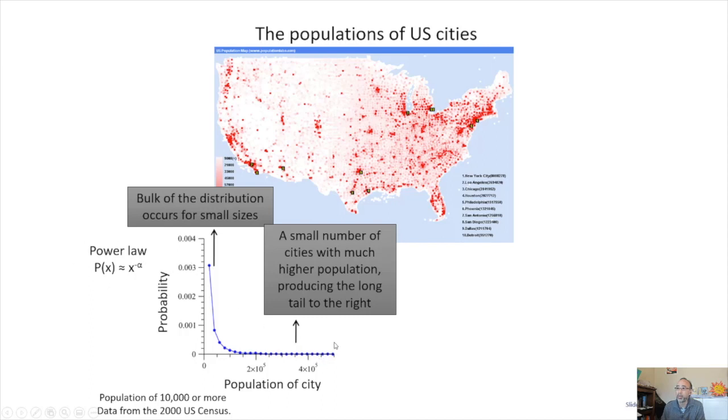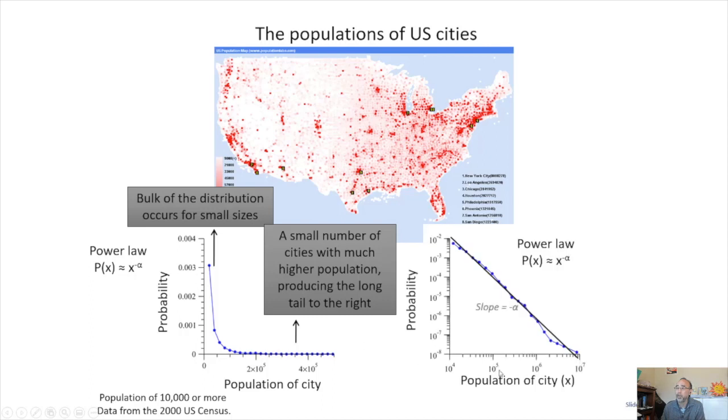And again, this follows a power law relationship, and in order to see if it's truly a power law relationship, you take the log log of both. You take the log of the population, log of the probability, and you should get a linear relationship with a slope of minus alpha.